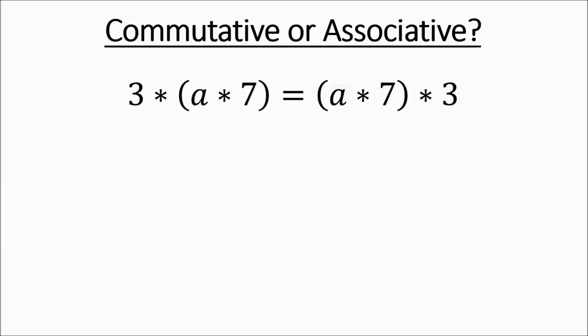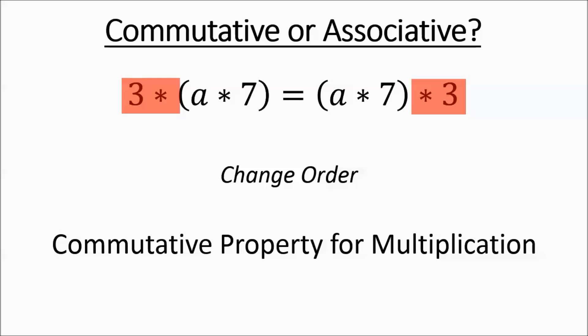Go ahead and try this one out. You can pause it if you need to. 3A7 on the left, A73 on the right. Well, the middle term is not the same. And first we had 3 times the parentheses. Then we have the parentheses times 3. That's going to be a change of order. It's going to be commutative property for multiplying.